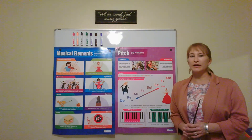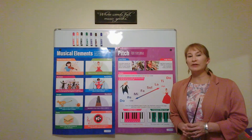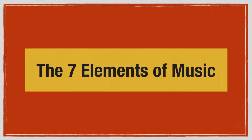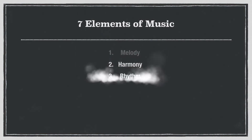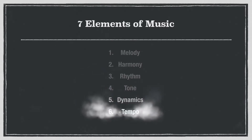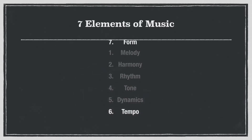Last month, in August, we learned about the seven elements of music. These are the fundamental building blocks in which all music is made up of. These seven elements are melody, harmony, rhythm, tone, dynamics, tempo, and form.